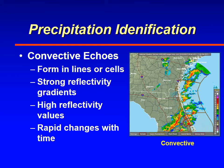With convective echoes, the way you identify them is usually they form in lines or in individual cells. They have very strong radar returns and also strong radar reflectivity gradients — meaning that the change in colors is very rapid, and if you are looping or watching over a period of time you'll see that those colors change and move very quickly.